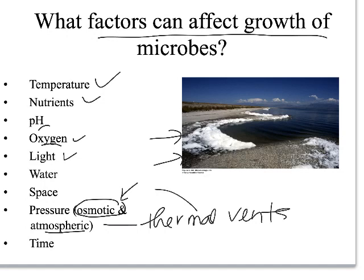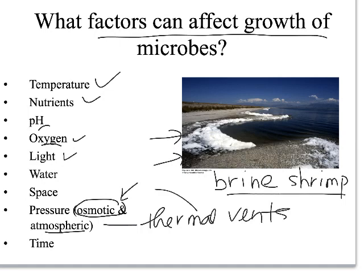There are organisms that can grow in the Great Salt Lake and the Dead Sea. One example — not a bacterium — is brine shrimp, sometimes called sea monkeys. They're little shrimp-looking things that came from the Great Salt Lake, and they need a really high salt concentration in order to grow.